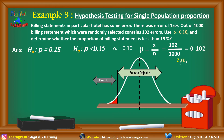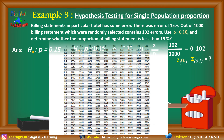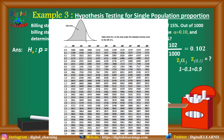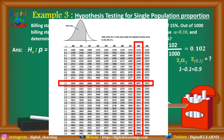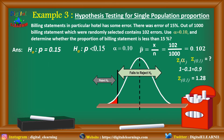Now we calculate the Z critical value, Z alpha at 0.1. From the Z table, we subtract 0.1 from 1 to get 0.9. Finding 0.9 in the Z table, the closest value is 0.8997, which corresponds to 1.2 on the vertical axis and 0.08 on the horizontal, giving us 1.28 as the Z critical value. Since it is a left-tailed test, we keep it as negative, so Z critical is minus 1.28.